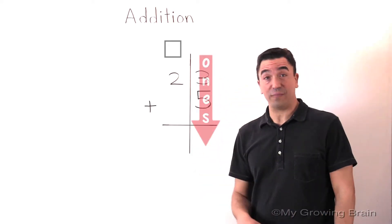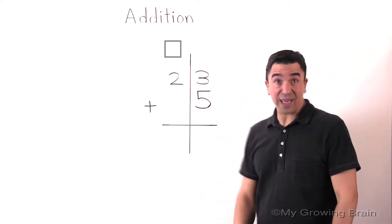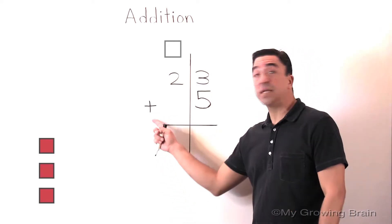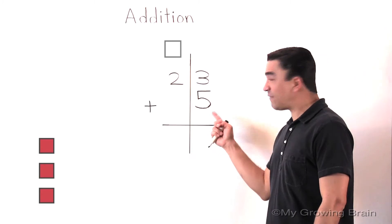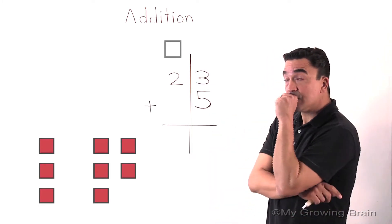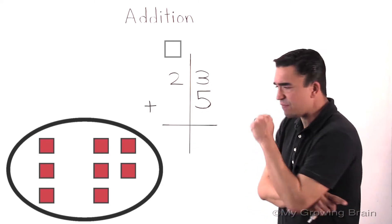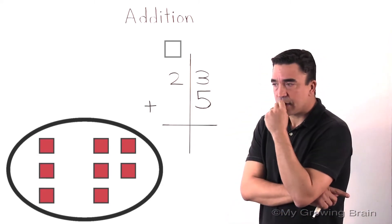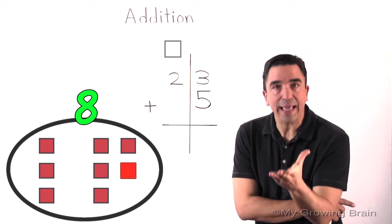Alright, we're going to start in the ones place. 3, 1, 2, 3, plus 5, 1, 2, 3, 4, 5. 3 plus 5, 1, 2, 3, 4, 5, 6, 7, 8.